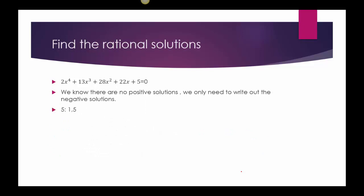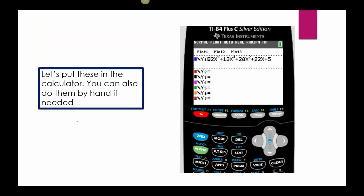Let's go on to the rational root theorem to find some of those solutions. The last term is 5, and since I only expect negative solutions, I'll just list negatives for p over q. From the last term: factors are 1 and 5. From the first coefficient 2: factors are 1 and 2. So my possible rational roots are negative 1, negative 5, negative one-half, and negative five-halves.